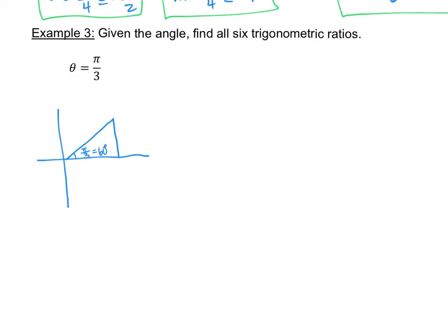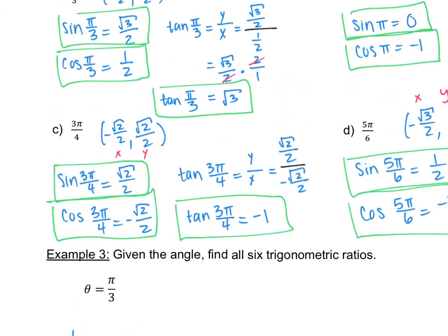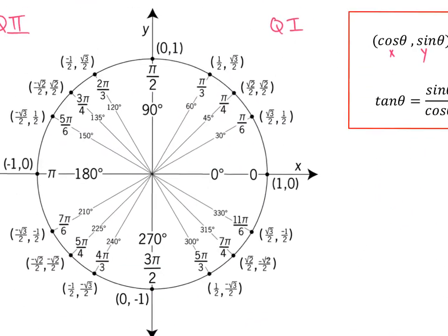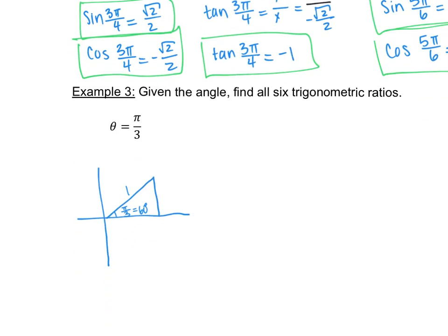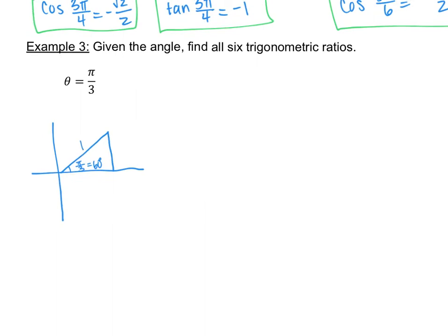Going up to pi over 3 on the unit circle, the x value is 1 half and the y value is square root of 3 over 2. Both are positive because 60 degrees is in the first quadrant. With those values, I know the entire triangle and can find all trig ratios.